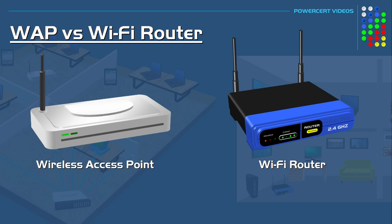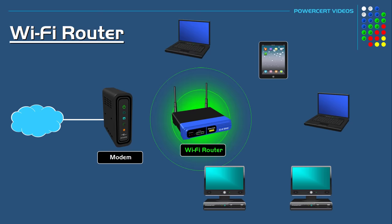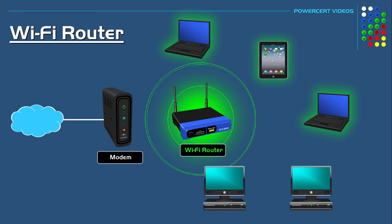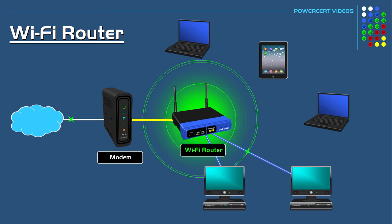Let's first talk about a wi-fi router. Almost everyone who has an internet connection in their home would have a wi-fi router, whether that wi-fi router is a separate device or if it's built into their modem. A wi-fi router is what allows multiple wired and wireless devices to join together in a local area network. It'll broadcast a wi-fi signal so that wireless devices can connect to it, and it'll also have a built-in switch with several network ports so that wired devices can connect to it using ethernet cables. Then that wi-fi router will directly connect to a modem to give those devices internet access.